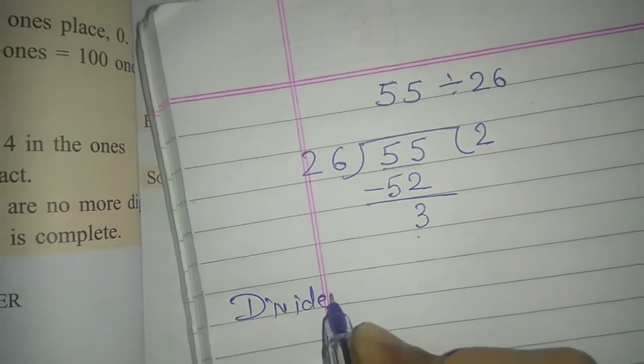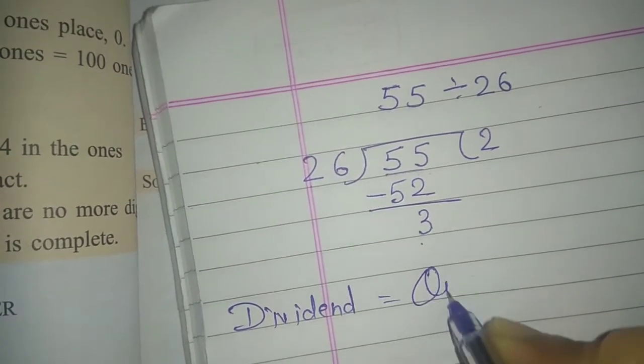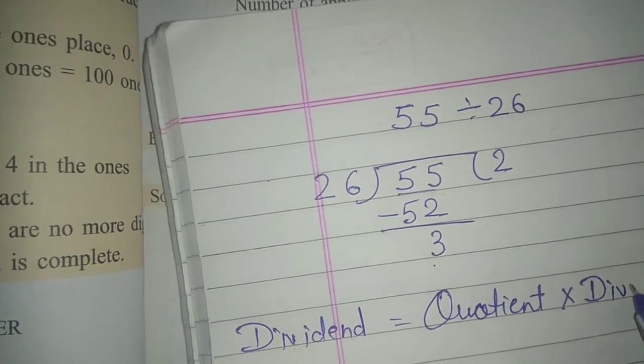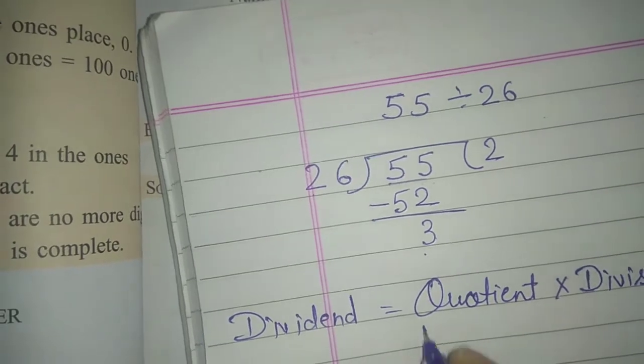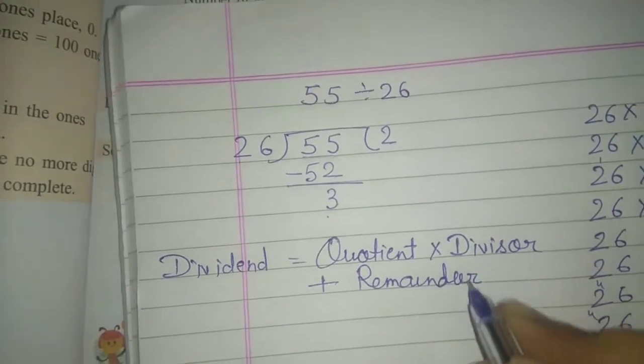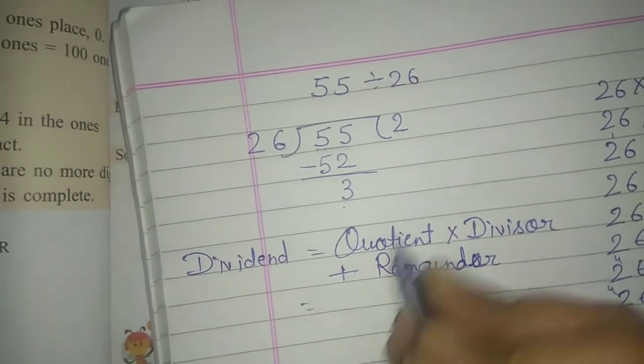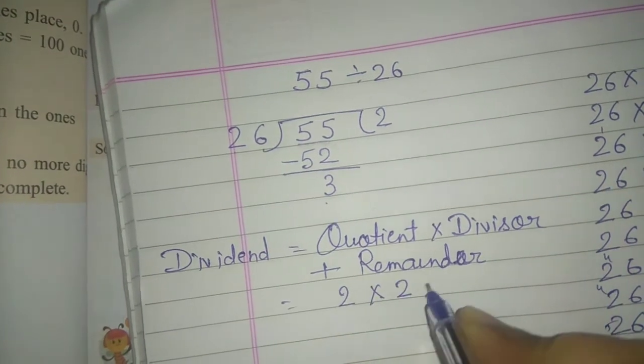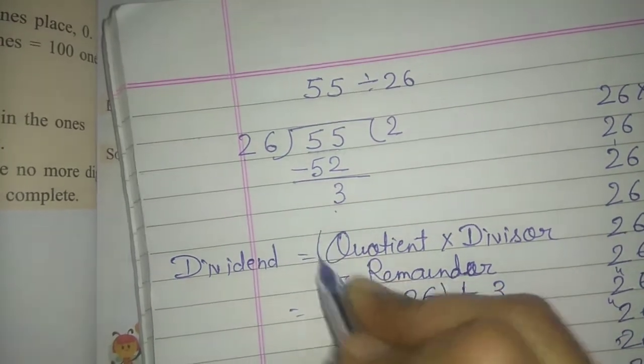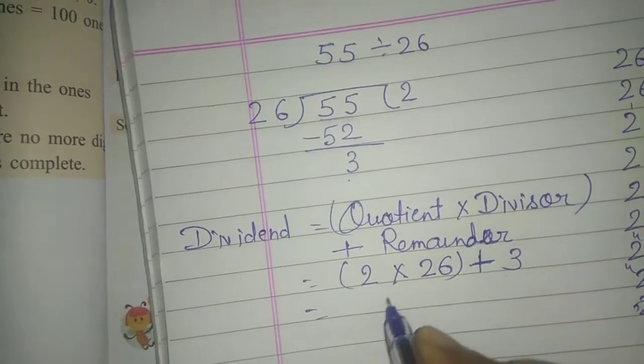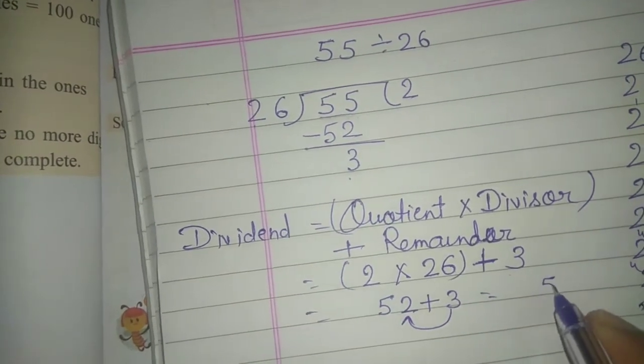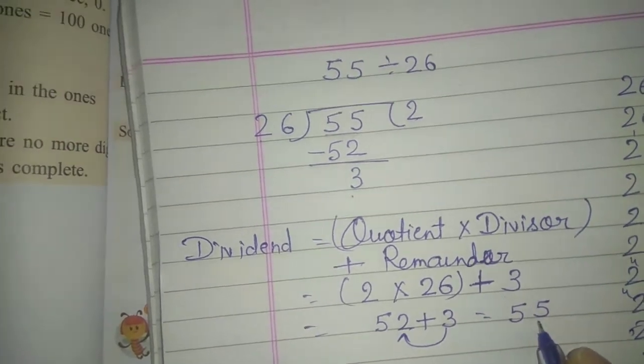Now we have to check the answer. The formula is: Dividend equals Quotient multiply by Divisor plus Remainder. So 2 times 26 plus 3. 2 times 26 is 52, add 3 equals 55. Your answer is right.